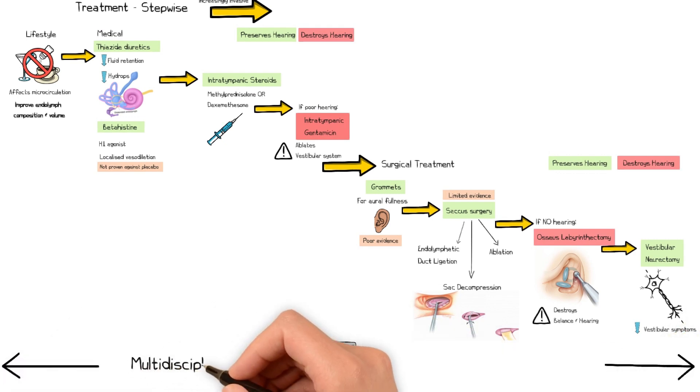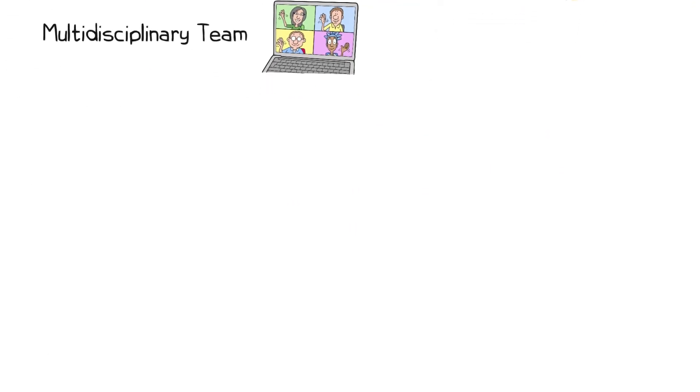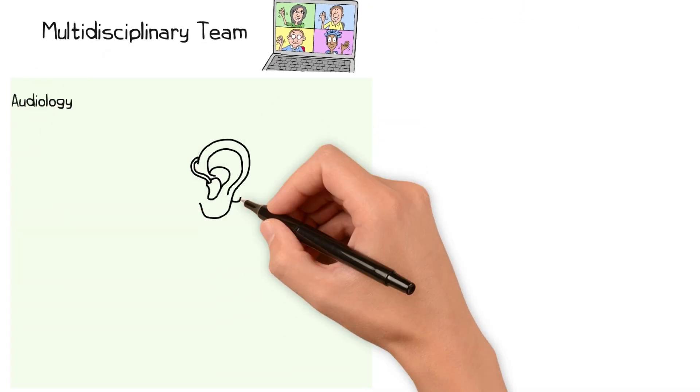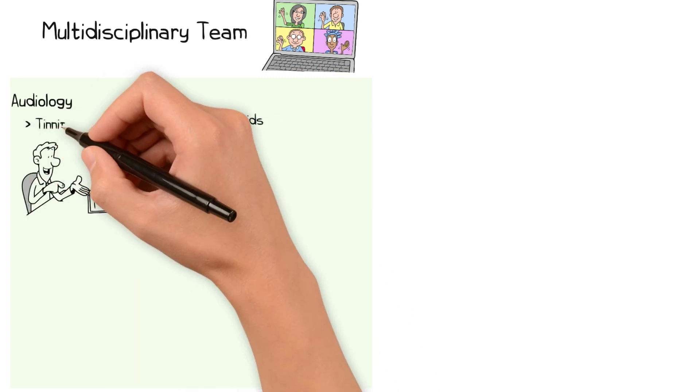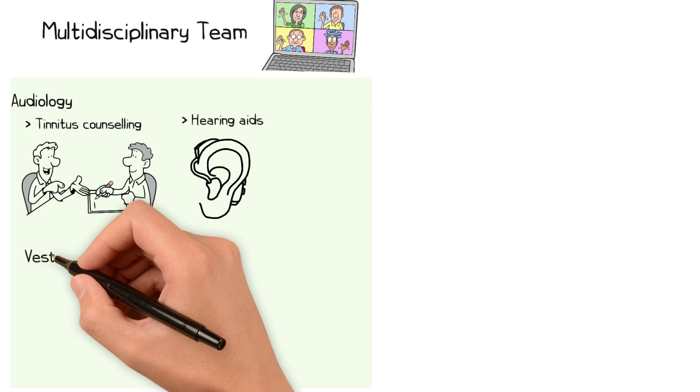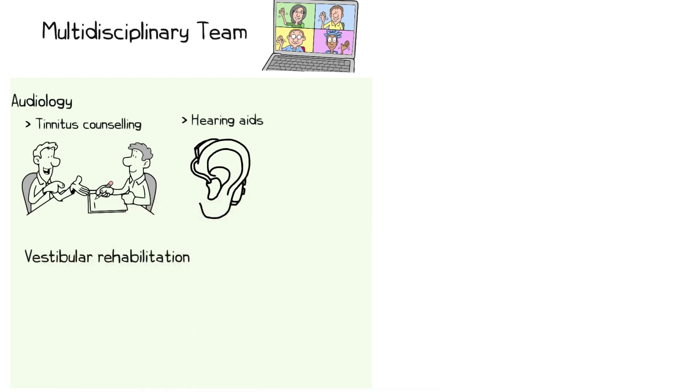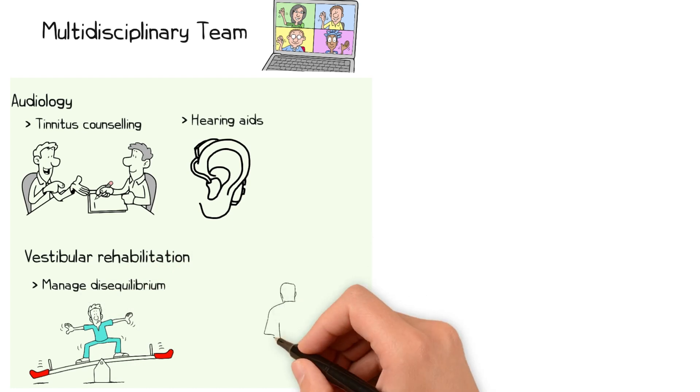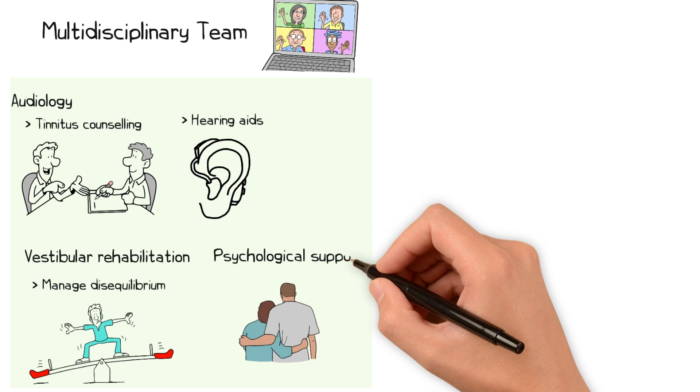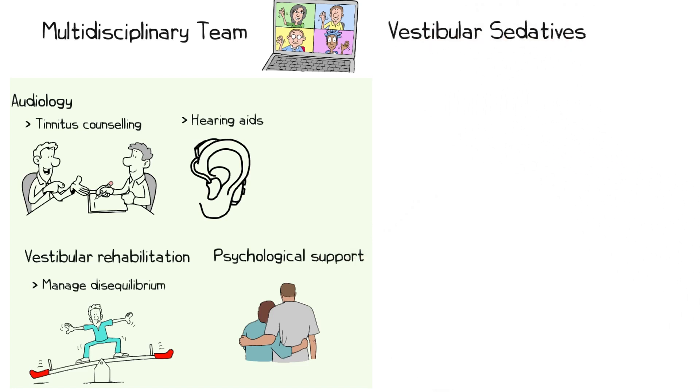Involvement of the wider multidisciplinary team is important for the management of these patients. Audiology can be helpful to treat any hearing loss with hearing aids and also to provide tinnitus counselling if this is bothersome. Vestibular rehabilitation can also help patients with generalized disequilibrium, and oftentimes these patients have significant psychological impact of these symptoms, and so may benefit from dedicated psychological support.